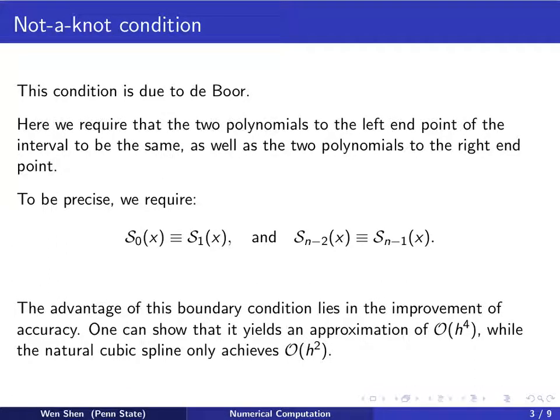The advantage of using this boundary condition lies in the improvement of accuracy. One can show that by using this not-a-knot condition, it will actually yield an approximation of fourth order. While when we use the natural cubic spline, one would only achieve a second order approximation.